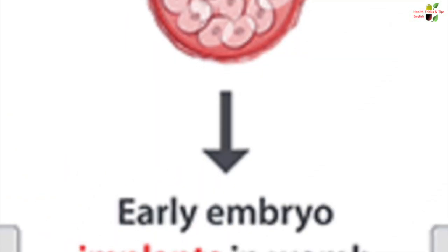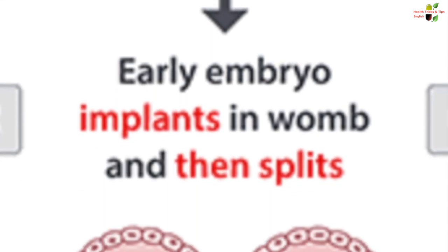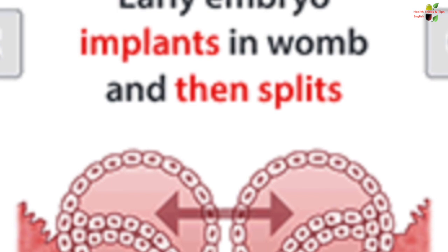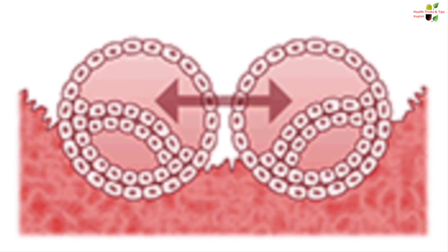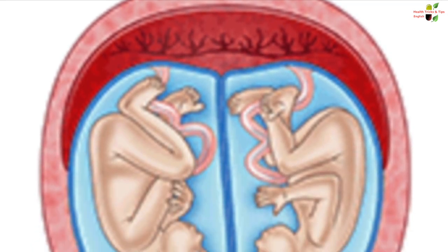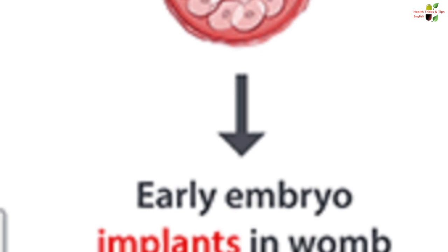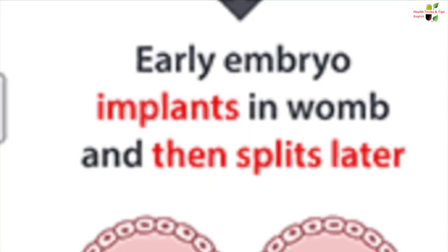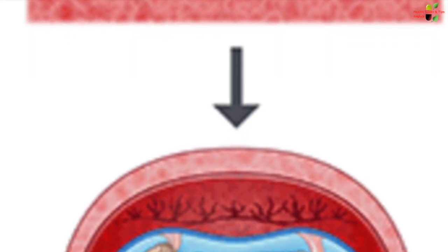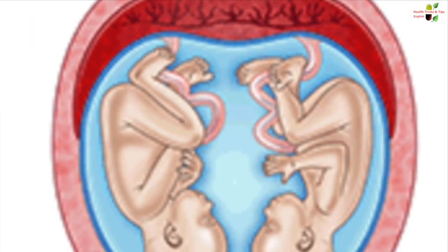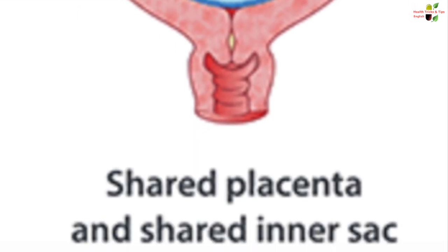The second category of identical twins is when the embryo implants in the womb and after that it splits. So as the splitting happens only after implantation, the placenta will be one, however they will have their separate amniotic sacs. The third category of identical twins would be when the embryo implants in the womb to have one placenta, but some time later it splits, so there is only one placenta and only one amniotic sac shared between the twins.